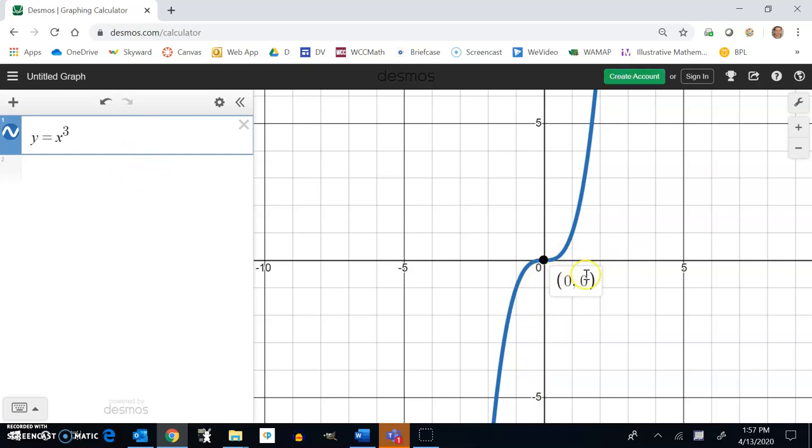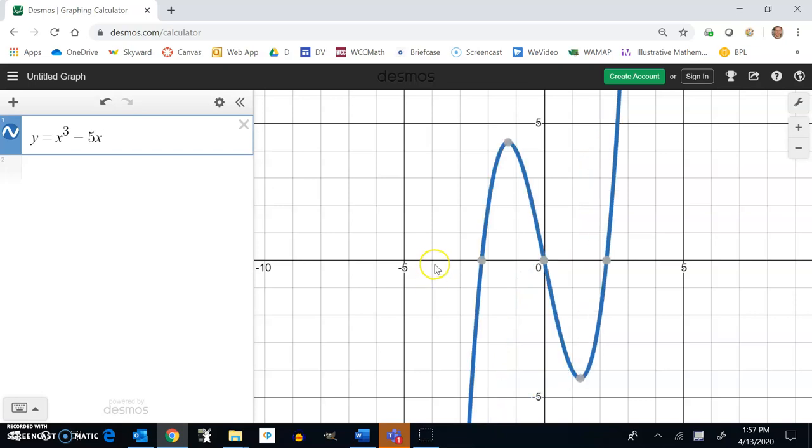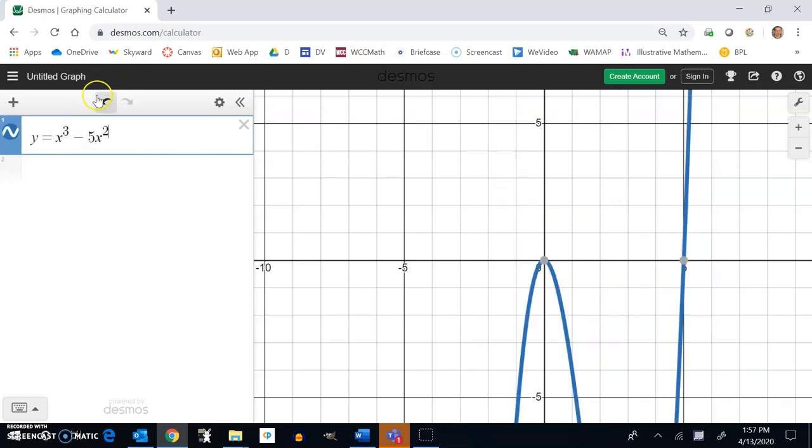It has this curve. We can mess with these a little bit. If I subtract 5x from it - notice it's still a cubic, x to the third power. Or I could say 5x², something like that. But let's just make it minus 5x for now.